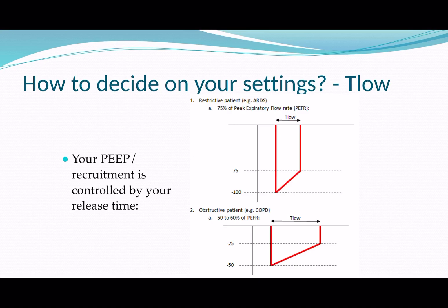The way we maintain alveolar recruitment during the release phase or expiratory phase of APRV is by having a very short expiration — on the order of a fraction of a second. By doing so, you allow gas to escape but don't allow enough time for the pressures to equalise between the ventilator and the lungs, and so you maintain alveolar recruitment.